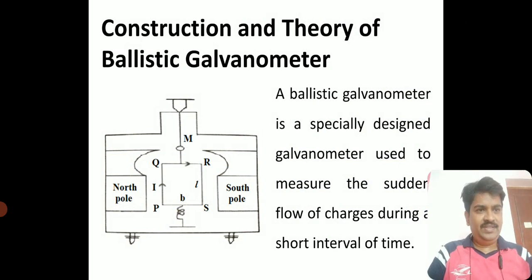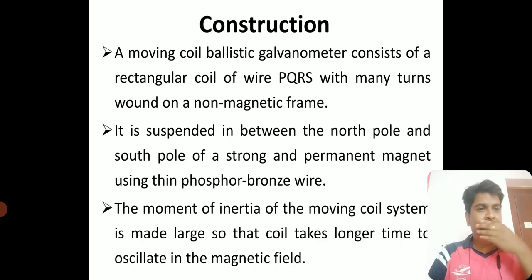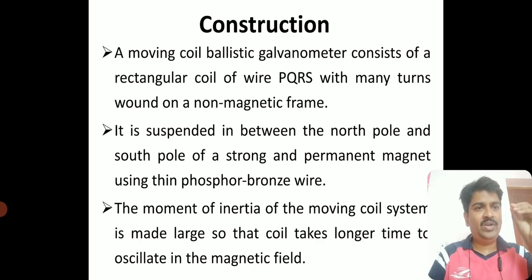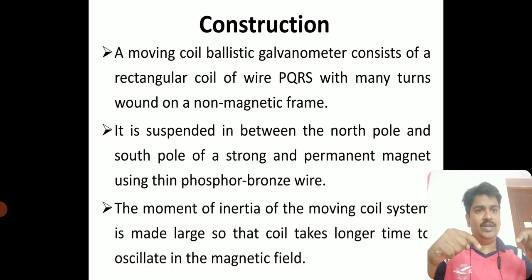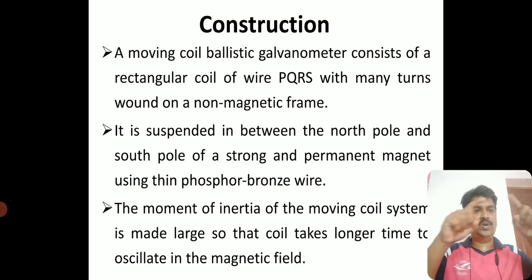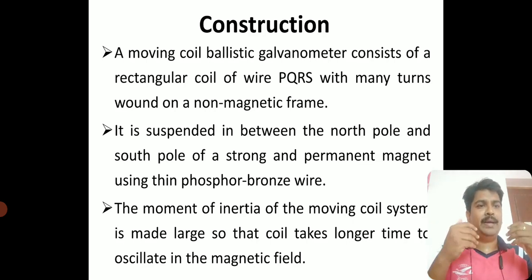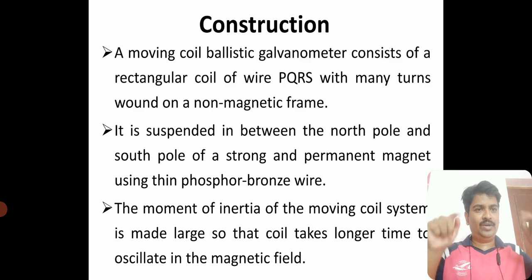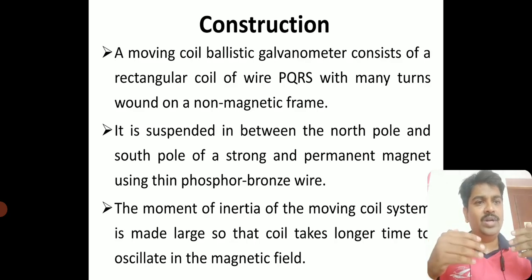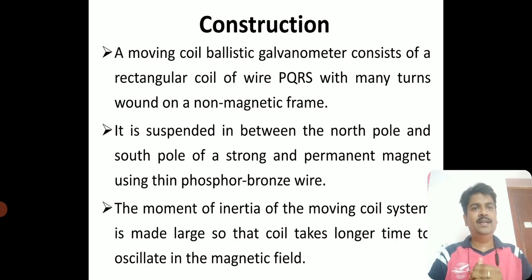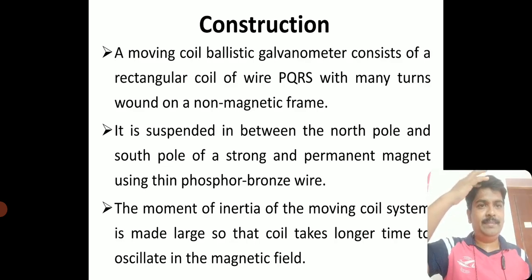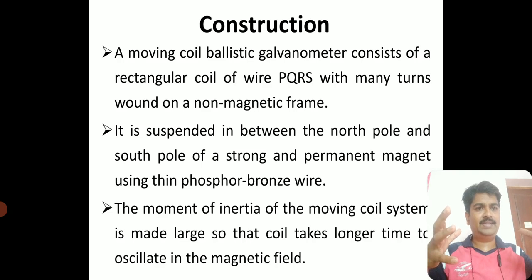First we will see the construction of the ballistic galvanometer and then its theory. The ballistic galvanometer consists of a rectangular coil PQRS with many number of turns. This coil is wound on a non-magnetic frame and suspended between the north and south poles of a strong permanent magnet.